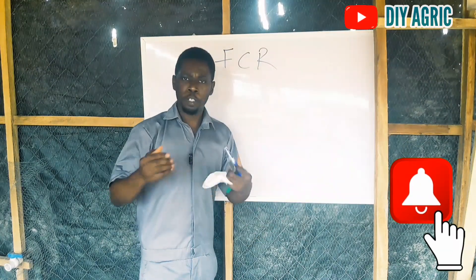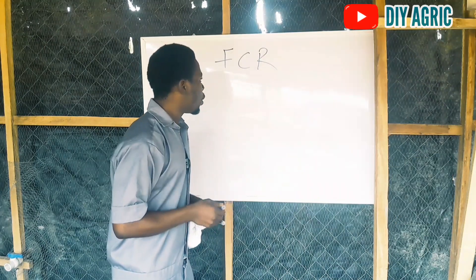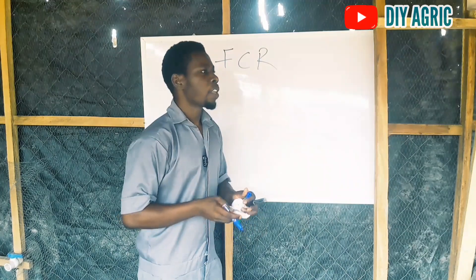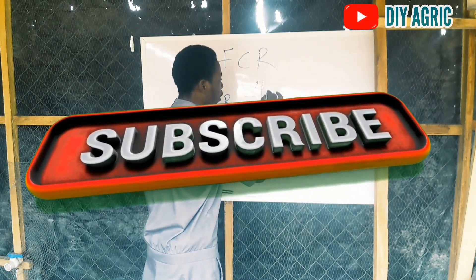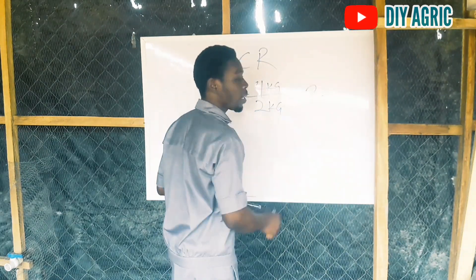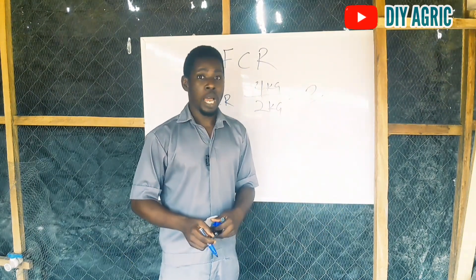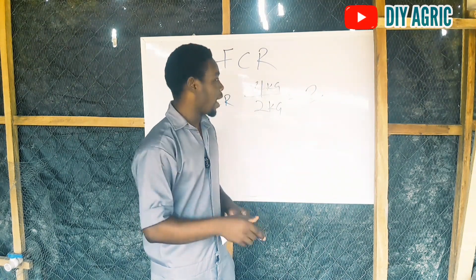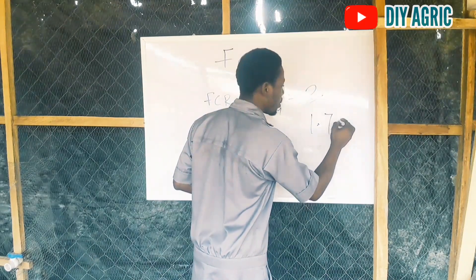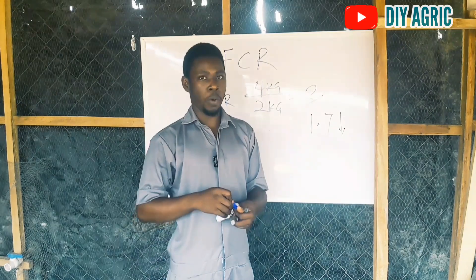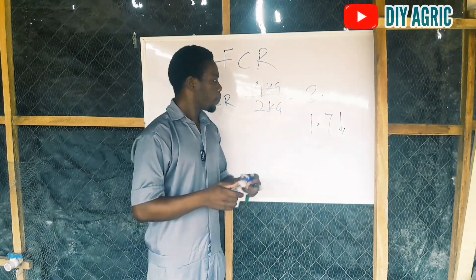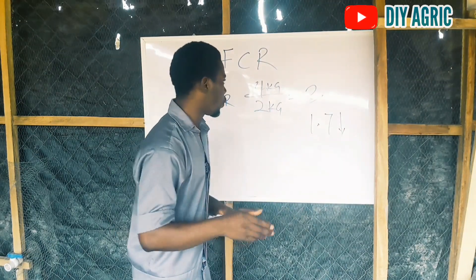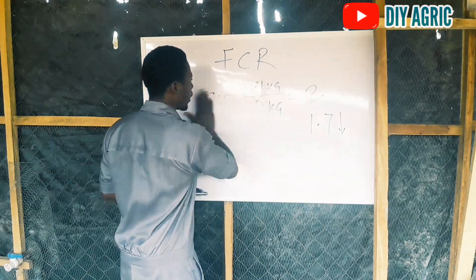Your feed conversion ratio is what we are focused on here. Some people say if you give your birds 4 kg of feed, they should give you 2 kg body weight — that is an FCR of 2. An FCR of 2 is poor. One thing about FCR is that the lower the better. If you can get an FCR of 1.7 or even lower, that is good — that is what you want to achieve. You don't want to go above 2. This should also help you select the kind of feed you use.